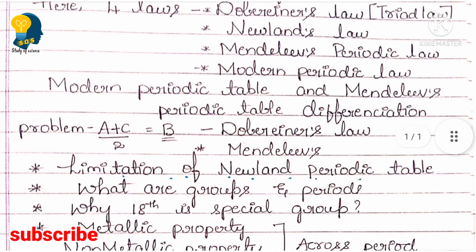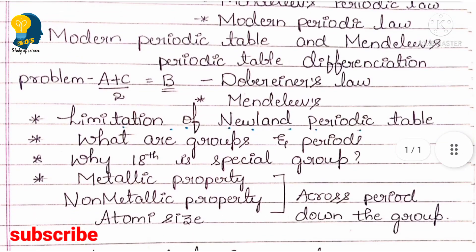You also have to know about the limitations of Newland's Periodic Table and Mendeleev's Periodic Table — both sets of limitations you must study, as they are definite questions asked in most papers. Additionally, study what is meant by groups and periods, and the trends in the periodic table: metallic property (electropositive character), non-metallic property (electronegative character), and atomic size.